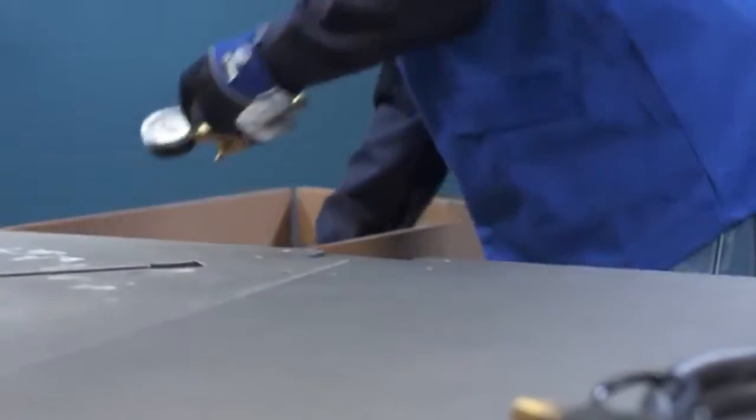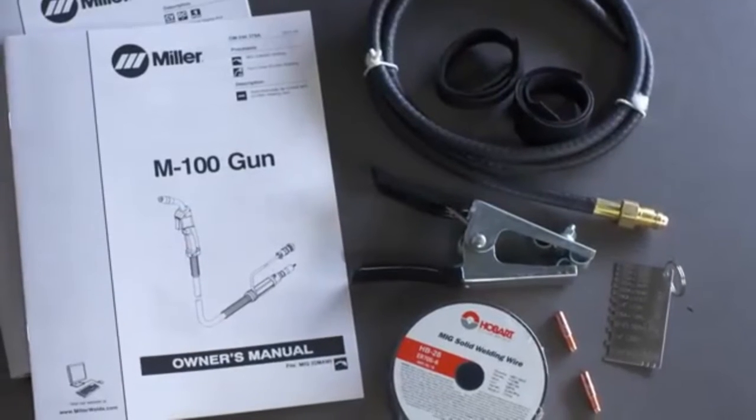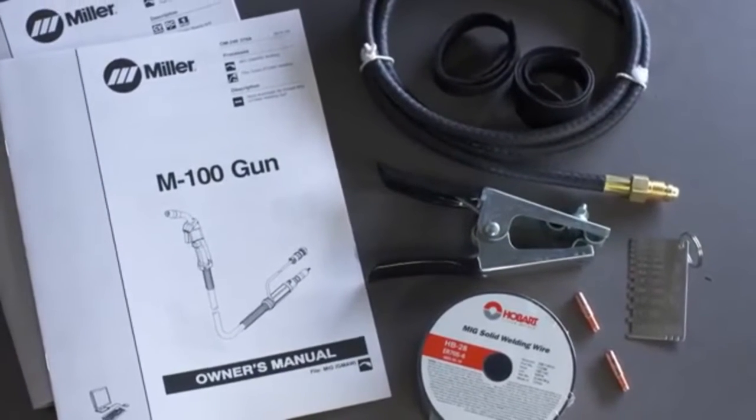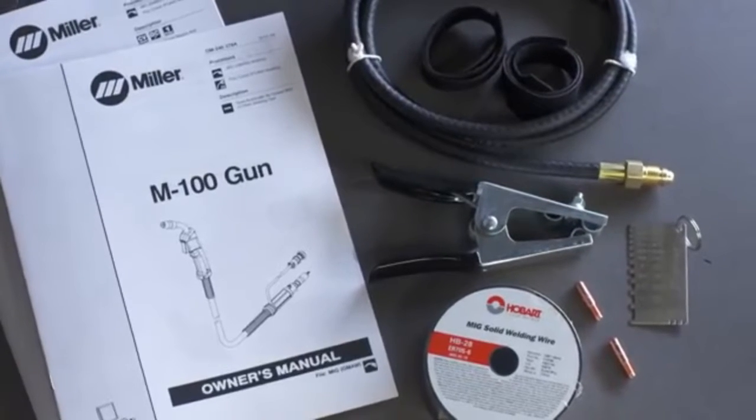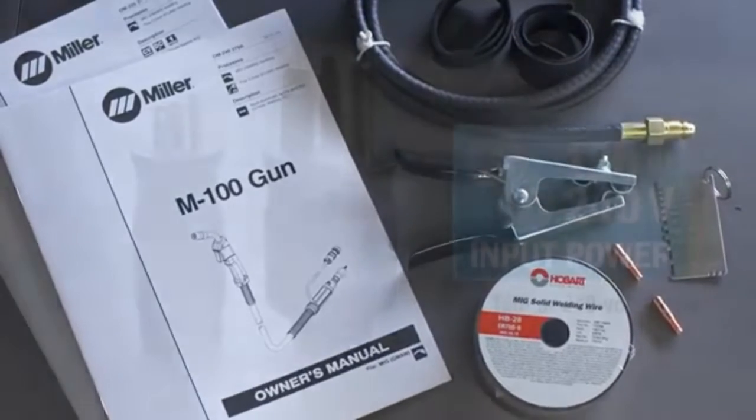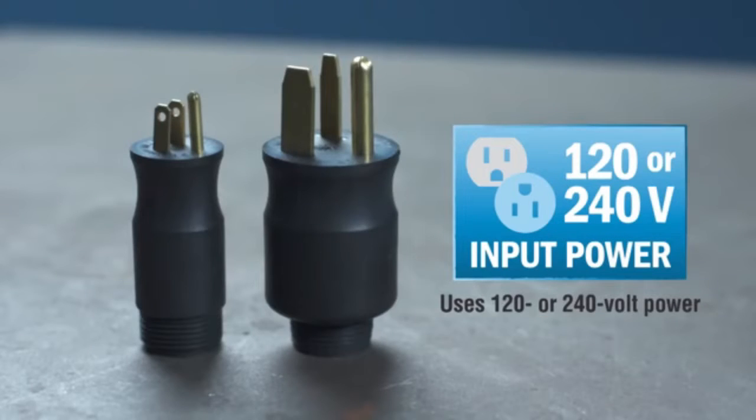Start by unboxing the machine. Remove the MIG gun, regulator, and shipping kit. The shipping kit includes an owner's manual, a sample spool of weld wire, gas hose, material thickness gauge, extra contact tips, work clamp, and velcro cord wraps. The Millermatic 211 also includes MVP plugs for 120 and 240 volt power.